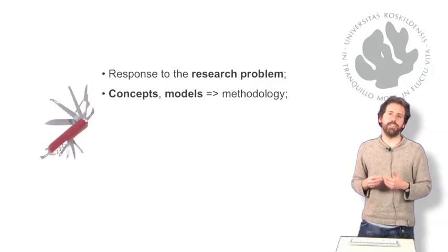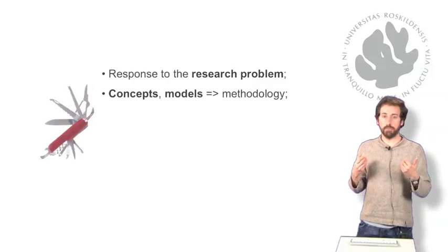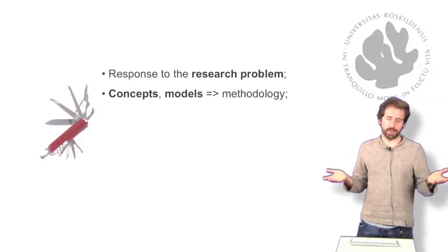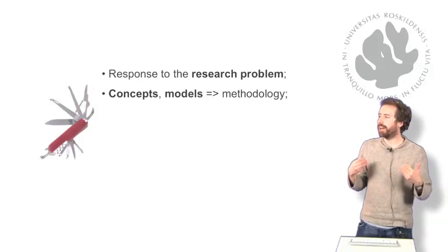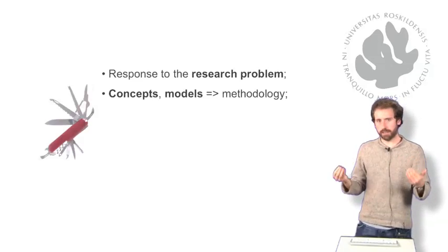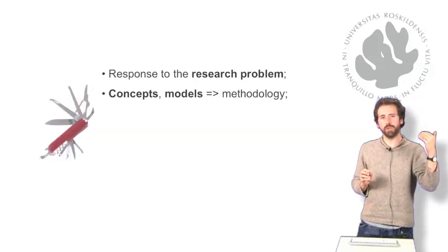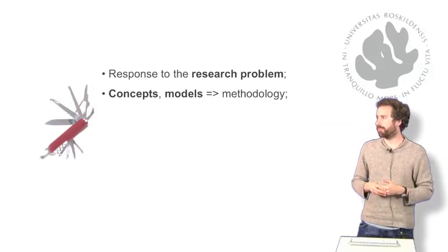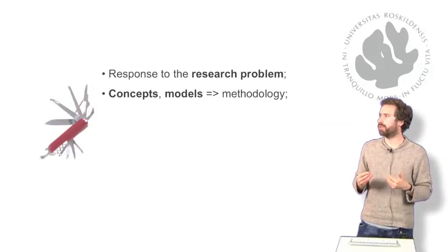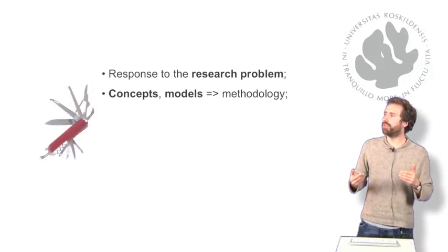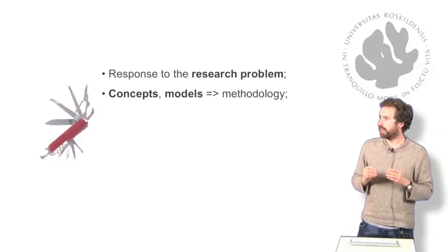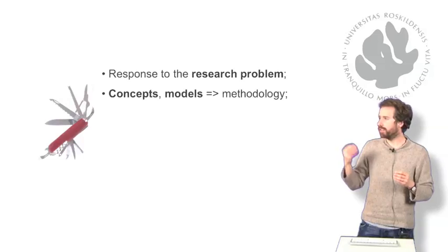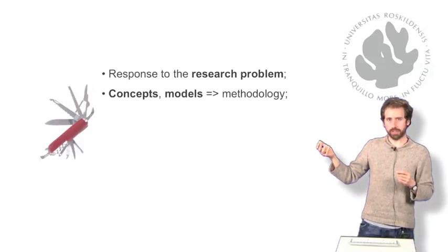Secondly, a theory contains concepts. It contains models for turning an otherwise incredibly complicated world. The world's a very big thing. So we have to find ways of making it simpler, narrowing down, taking out the aspects which we see to be most relevant. We use models, we use concepts. Those concepts, those models, as you work through them in your theoretical discussion, you're beginning to produce the backbone of your methodology. This is where you're producing the how to do of your project.